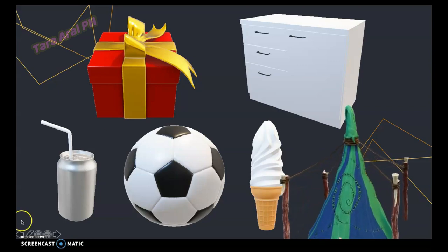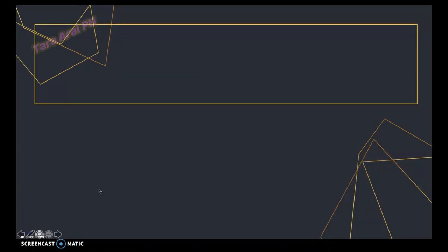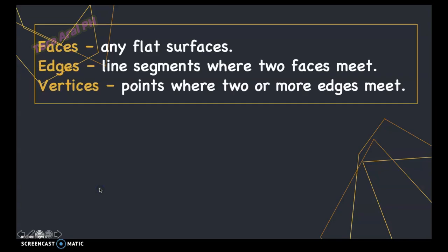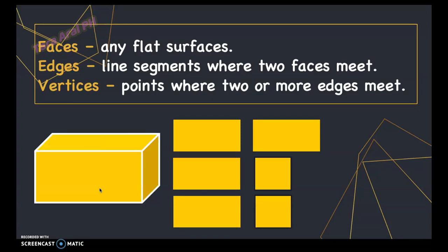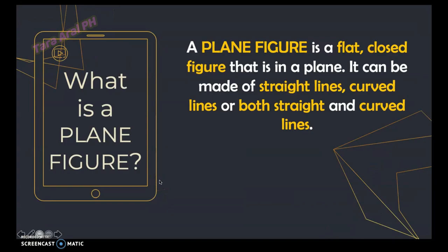Solid figures have their parts: faces are any flat surfaces — a shape with a flat surface can stand still while curved faces could roll away. Edges are line segments where two faces meet, and vertices are points where two or more edges meet.